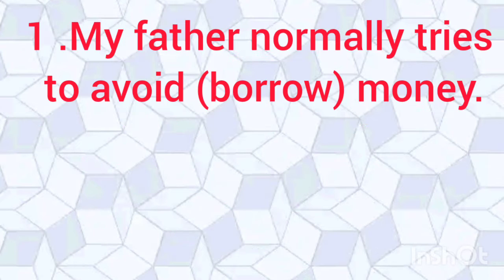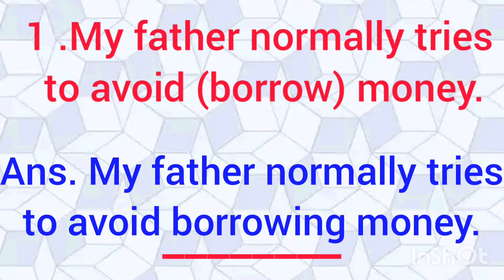Number 1: My father normally tries to avoid (borrow) money. You have to write the appropriate form of the verb 'borrow'. The answer will be: my father normally tries to avoid borrowing money.